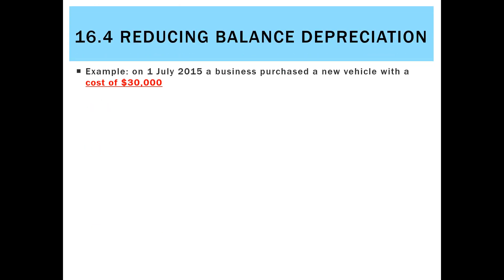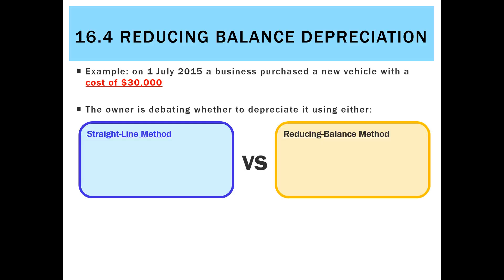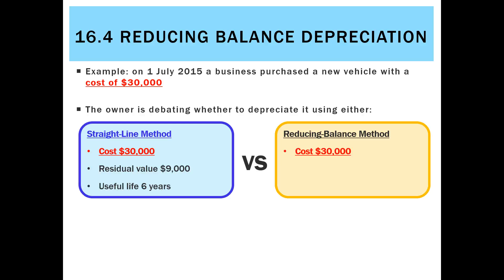Let's have an example to compare the two. On the 1st of July, a business purchased a new vehicle with a cost of $30,000, and the owner is debating whether to use either the straight line method or the reducing balance method. If using straight line, the estimated residual value is $9,000 and the useful life will be six years.